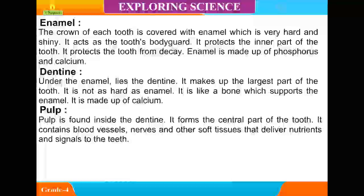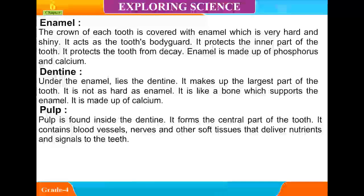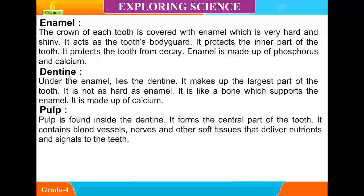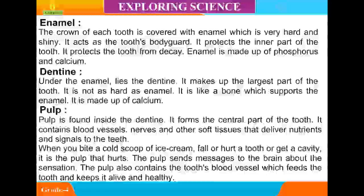Pulp. Pulp is found inside the dentine and forms the central part of the tooth. It contains blood vessels, nerves, and other soft tissues that deliver nutrients and signals to the teeth. When you bite a cold scoop of ice cream, fall or hurt a tooth, or get a cavity, it is the pulp that hurts. The pulp sends messages to the brain about the sensation. The pulp also contains the tooth's blood vessel, which feeds the tooth and keeps it alive and healthy.